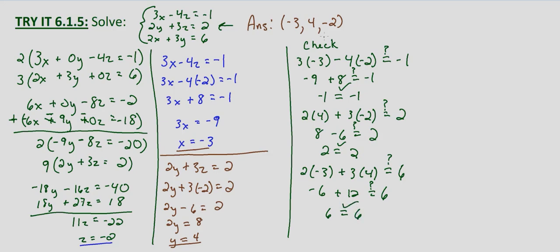So we've checked our ordered triple solution in all three equations and it worked. Therefore we know our answer is correct: x equals negative 3, y equals 4, and z equals negative 2.